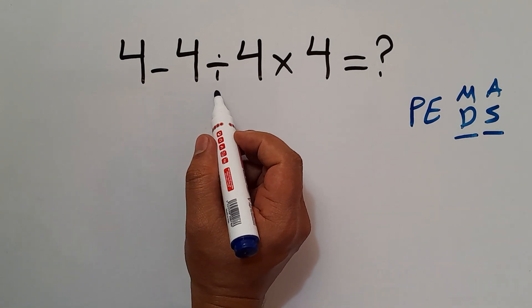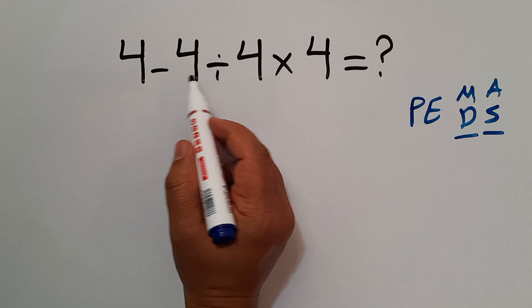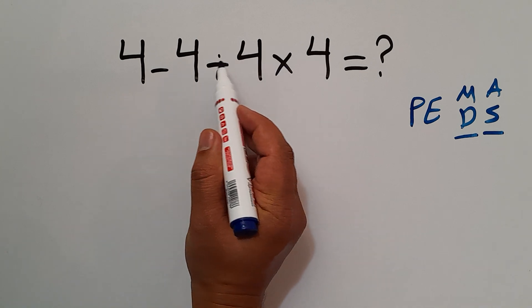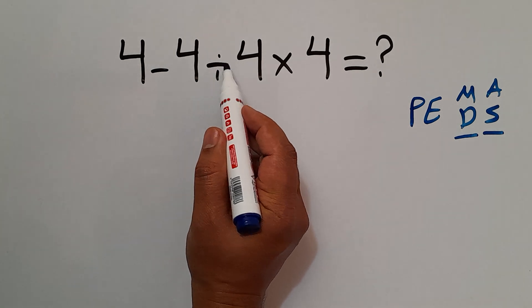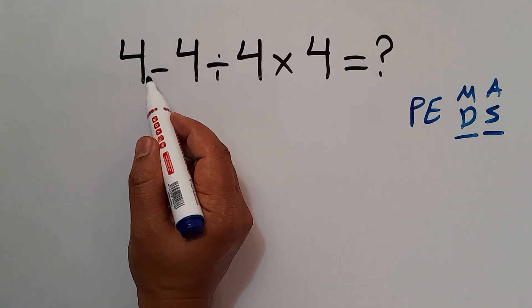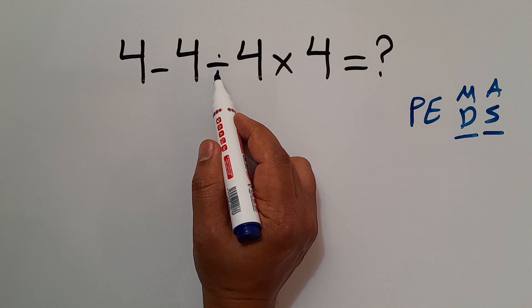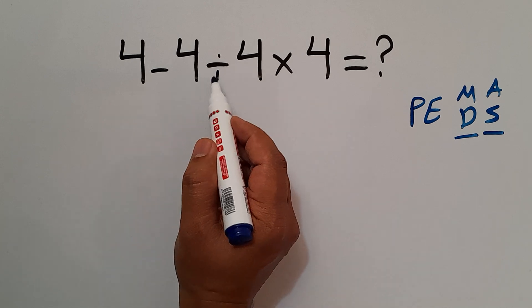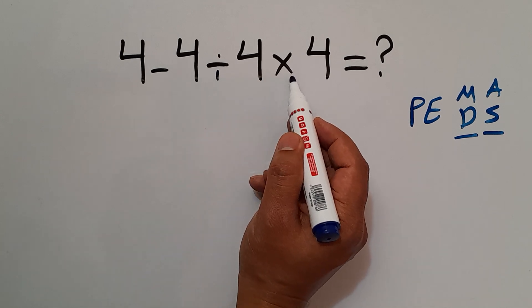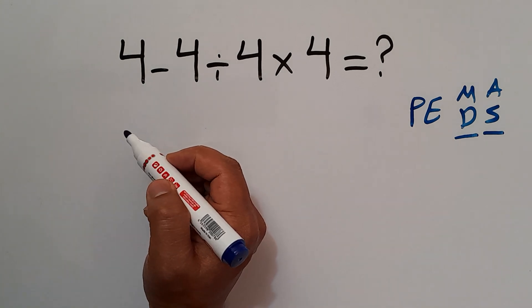So here, multiplication and division have a higher priority than subtraction. And also, multiplication and division have equal priority, and we have to work from left to right. So first, this division, then this multiplication, and finally this subtraction.